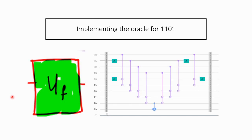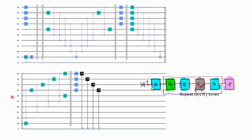This is how the implementation of the oracle looks for 1101 — this is very similar to the two-bit oracle implementation we have seen, just bigger in size. And this is how the full circuit looks — this is one iteration of the circuit. Here are the four bits q0, q1, q2, q3, and you have the Hadamard gates applied — this is the first part.